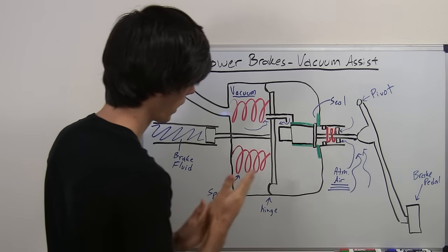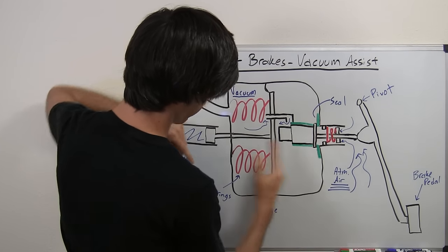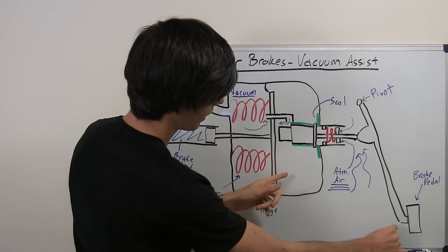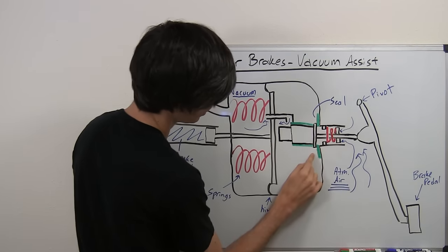Now what happens is this plate here can move up and down with these hinges, or left and right rather, and as you push in this brake pedal, what's going to happen is you've got these seals here.